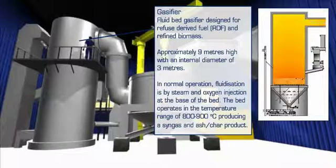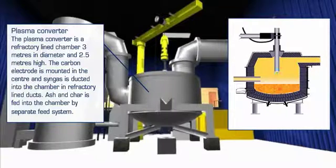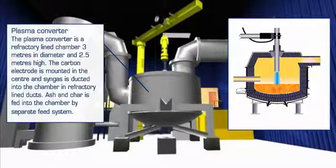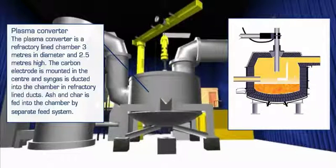A small percentage of the input material — a mixture of ash and char — is removed from the base of the bed and transferred to the plasma converter. The plasma converter is a refractory lined chamber with a carbon electrode and electrode control equipment mounted at the centre of the chamber roof. On entry into the plasma converter, the syngas is forced to swirl around the chamber, allowing maximum time for the gas to be exposed to the high temperatures and intense ultraviolet light of the electrode arc before exiting through a refractory lined duct for further processing. The ash and chars are also treated in the plasma converter, becoming a molten product which is continually removed, cooled and processed into a recyclable aggregate.